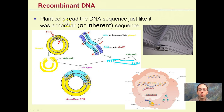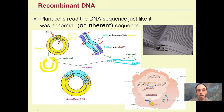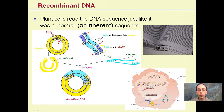Plant cells read the DNA sequence just like a normal sequence — reading along: A for adenine, G for guanine, so on and so forth. So when we do recombinant DNA or insert genes, you can see our ECO R1 site — a restriction enzyme — and we insert a gene of interest. The plasmid is just read along as normal. It doesn't read it as anything different or foreign because it's the same universal code shared across all organisms.